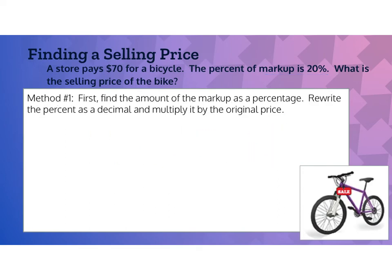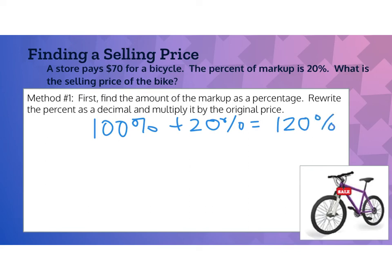Another way is to first find the markup as a total percentage, rewrite it as a decimal, and multiply by the original price. The store paid $70, which represents 100%. Adding the 20% markup gives 120%. Written as a decimal, 120% is 1.2. Multiplying 1.2 by $70 still gives us $84 as the selling price.